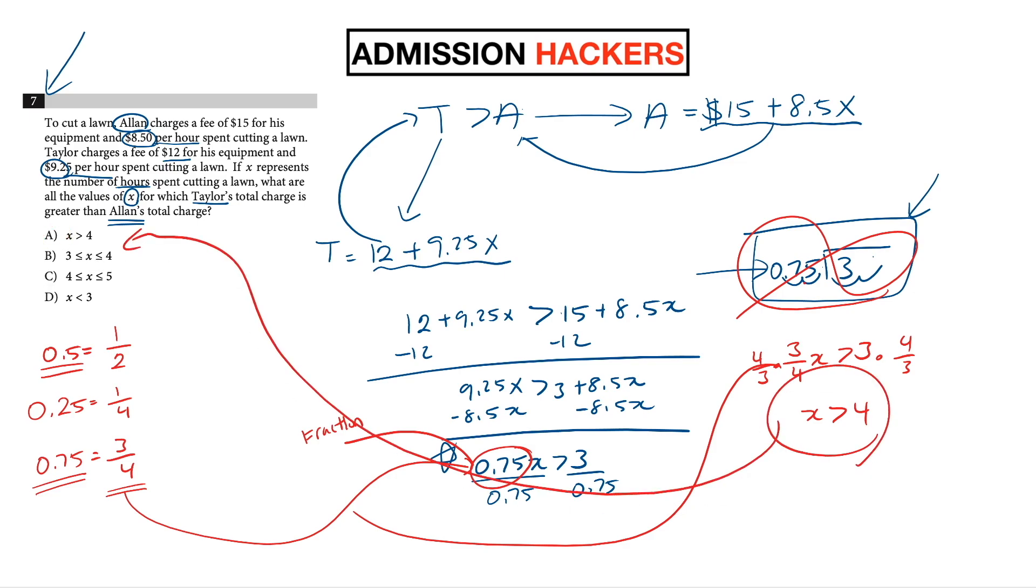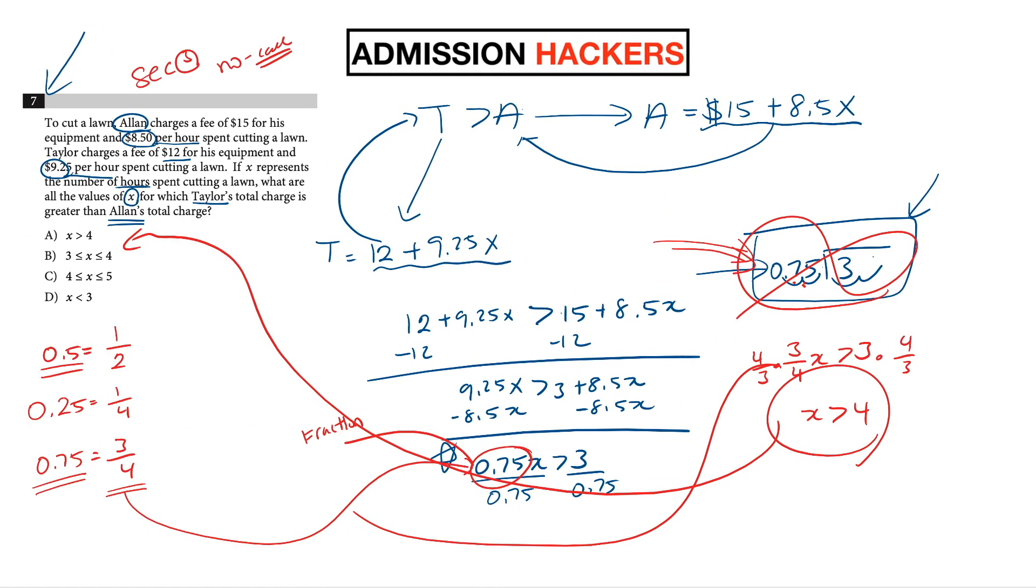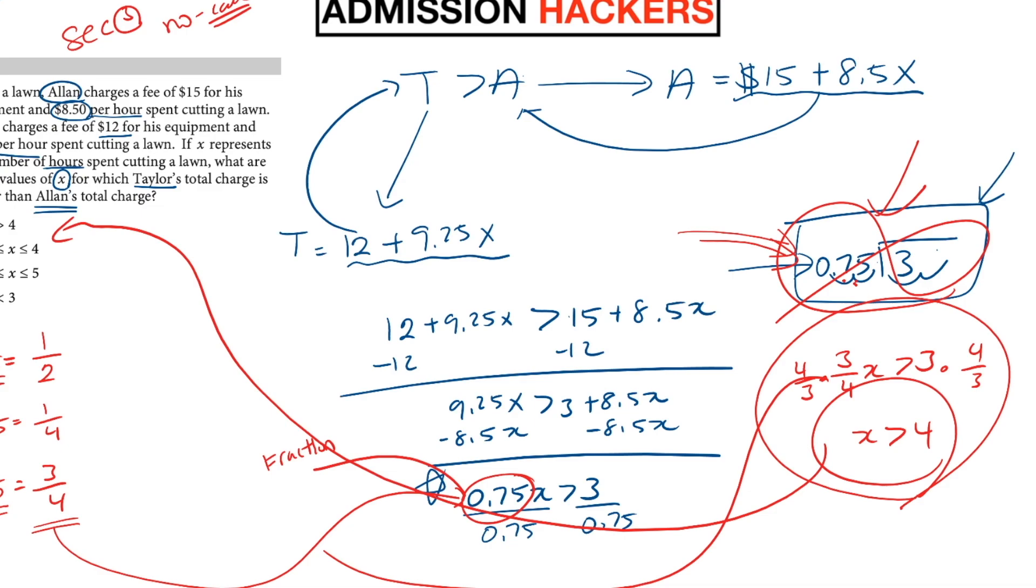So here's the thing, guys. This question is from section 3, which means it's from the non-calculator section. And on the SAT, they will never, ever, never, ever make you do this division with the decimal. And if you catch yourself doing it this way, that means you're going the wrong way and there is a faster way available. Of course, you can get the answer by doing this crazy math right here. But I mean, if there's a faster way, wouldn't you want to use the faster way instead of sticking to this one and end up having a time issue?